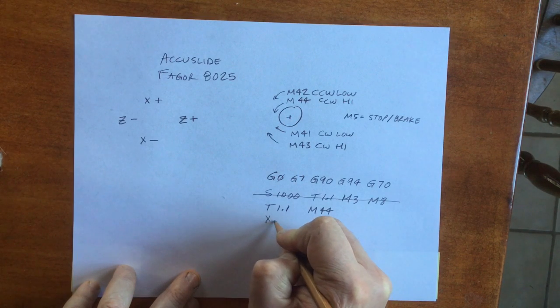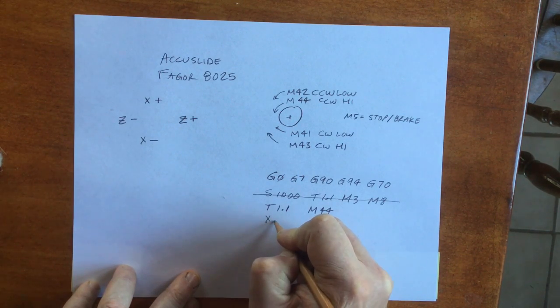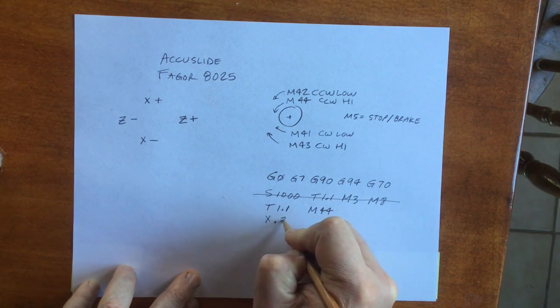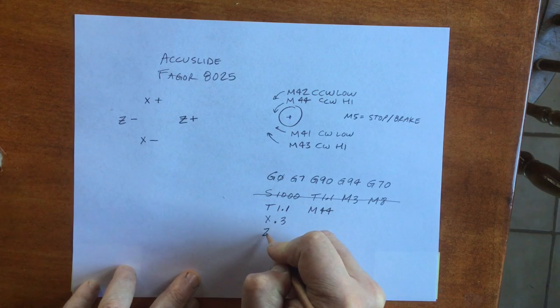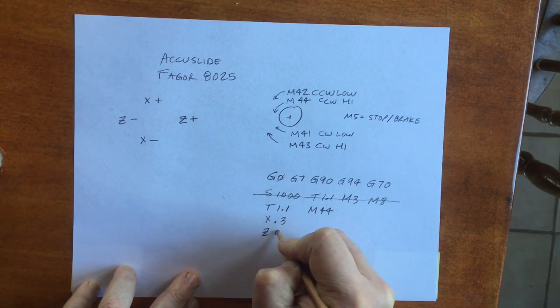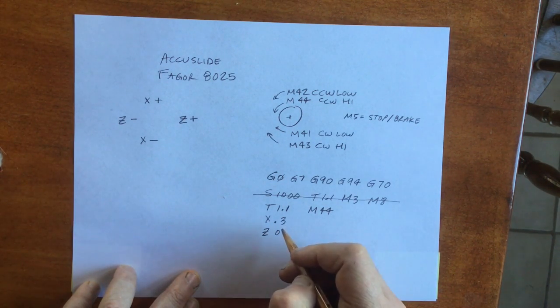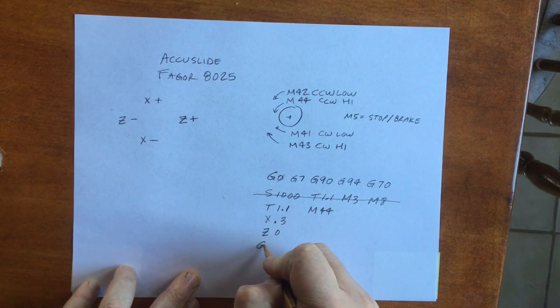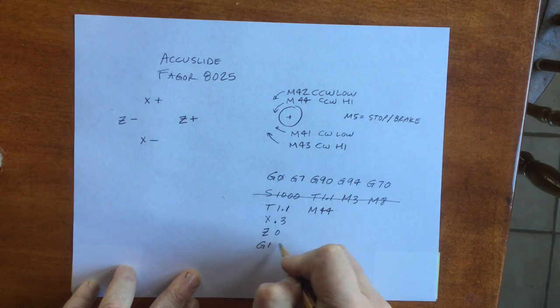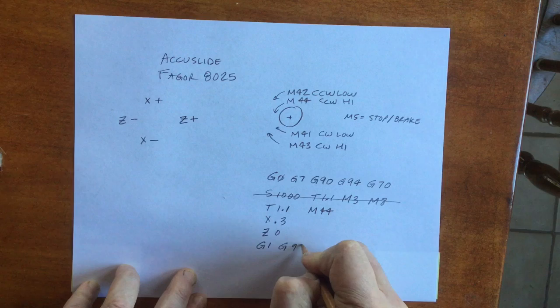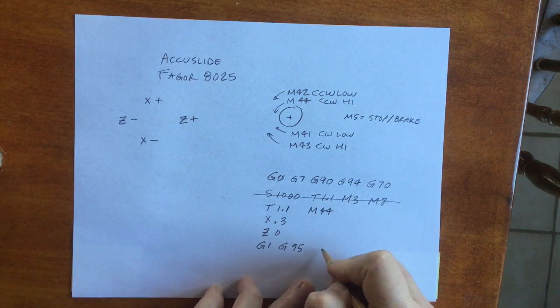So the spindle is running now, and we've got to move the tool to some clear place in front of the part to begin cutting. Next, we're going to call G1 which is feed rate, G95 which is inches per revolution, and declare some feed rate.